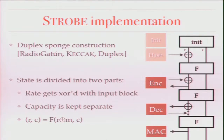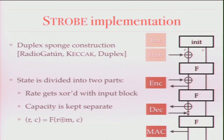That pattern is a sponge construction. This is based on the work by the Keccak team and others who have worked on sponge constructions, in particular the duplexing sponge construction. The state of the object in a sponge construction is divided into two parts. One part, which I'll call the rate — it's actually the size of that part — is what interacts with the outside world. If you hash something, you XOR it into that part of the state. If you want to encrypt something, you XOR it with that part of the state and then the ciphertext is returned.